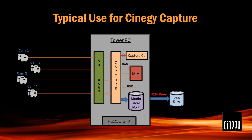Imagine it's a larger production with an exec producer who wants a copy of everything recorded that day. At the end of an event, the last thing people want to do is transcode or copy files. You can plug in a USB drive and simultaneously as you're recording broadcast quality, create an H.264 proxy and write it to USB storage. At the end of the event, just pull that USB drive, hand it to your producer, and there's a frame-accurate copy of everything to take back to base.